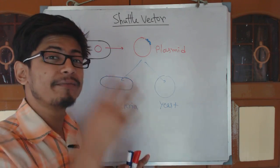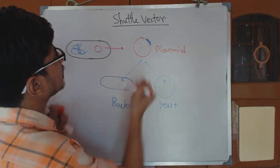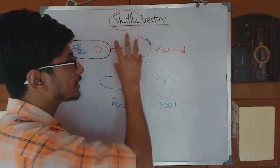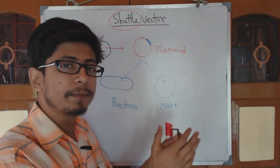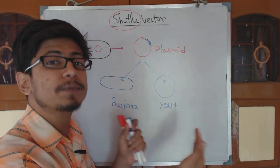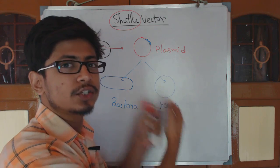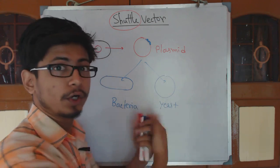That is the idea behind shuttle vector because the term shuttle means here we construct this vector keeping in mind that the vector should express itself, the vector should deliver a gene itself inside both two different types of the host cell. One is a bacteria, another one is yeast. So it has the capability of inserting the gene and expressing it in both of them.